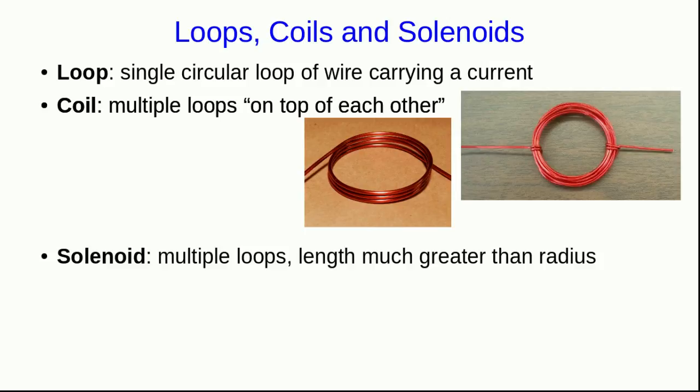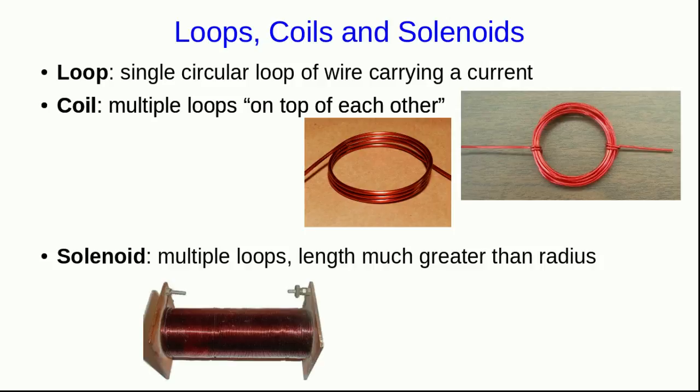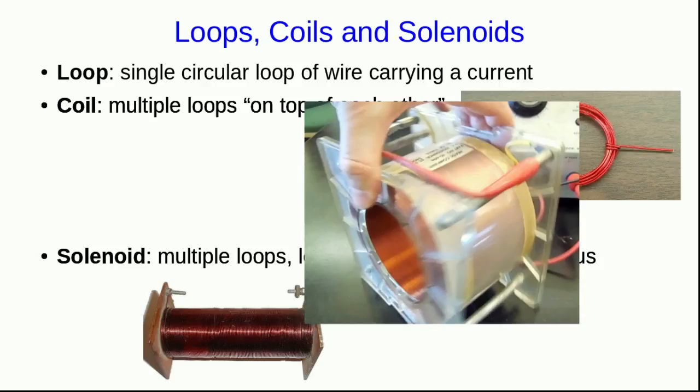On the other hand, in a solenoid, you have multiple loops, but the length of the bundle of loops is much greater than the radius of the loops. And so something like this is what we would call a solenoid. But often you see things that are neither coils nor solenoids. So in the lab, you'll use things that look a lot like this. If you look at them, the loops in them aren't all the same radius, and they're also not all lying approximately in the same plane. But on the other hand, it isn't much longer than its radius, and so it's not a solenoid either.